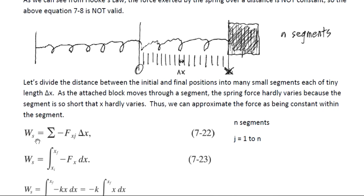We can write the work done by the spring as the sum of the force in each little segment times the width of that segment. The work is negative because the force from the spring is opposite to the displacement — in this example, the spring force is to the left while the displacement is to the right.